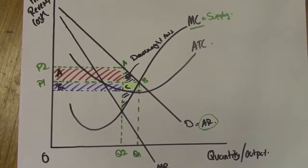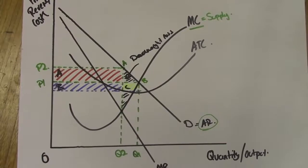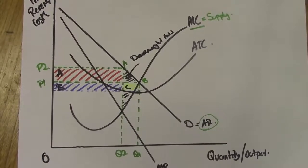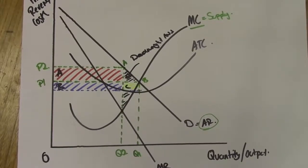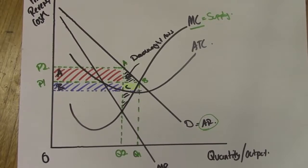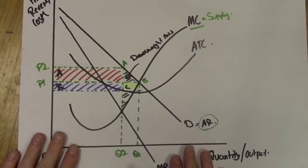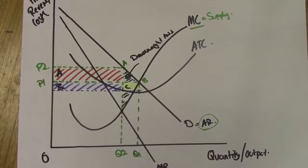The overall evaluation is that we need monopolies to provide essential services, but it's essential that they are regulated and governments monitor their behavior to avoid the exploitation of customers. I hope that helps and you feel more confident using this diagram in your responses. Time yourself drawing it — memorize it — because this diagram speaks a thousand words and you can gain so many marks by using it to support your analysis and evaluation.